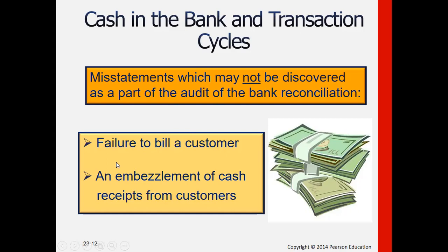Failure to bill a customer — whether intentional or unintentional — means no accounts receivable for a credit sale or no collection from a cash sale, which impacts cash. Another example is embezzlement of cash receipts from customers, where a cashier in connivance with an accounting staff hides a collection. Without that being recorded, cash is understated and not kept in the company's bank accounts.